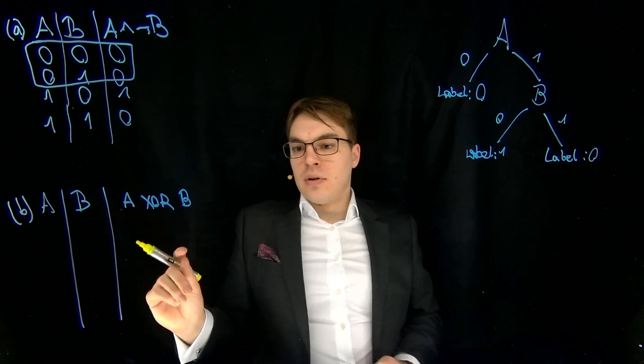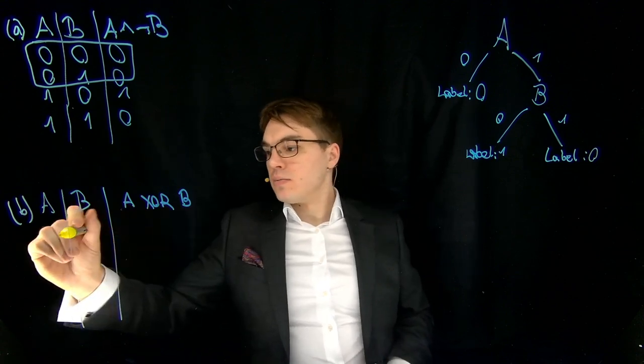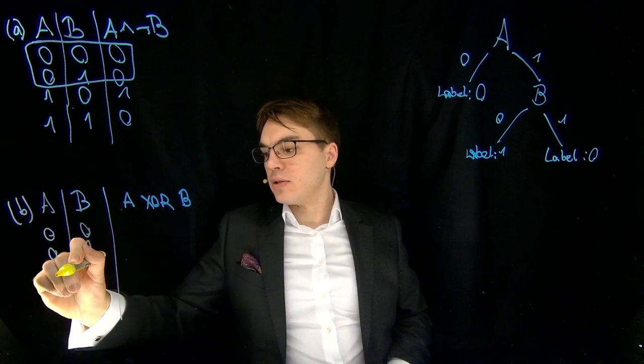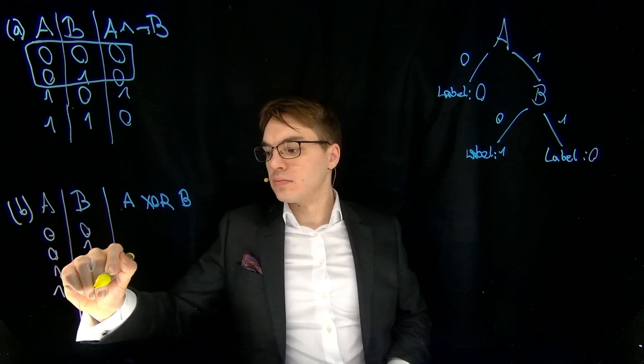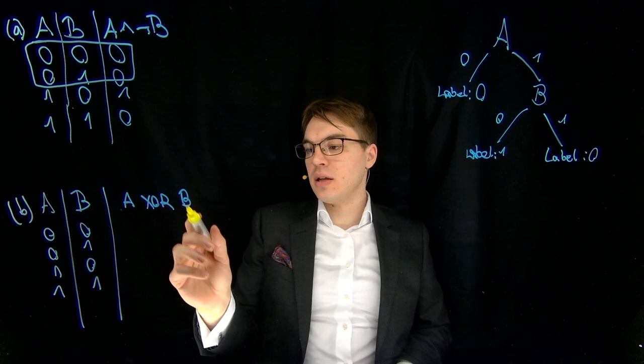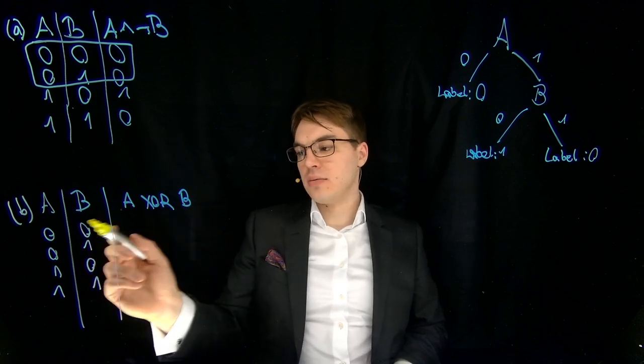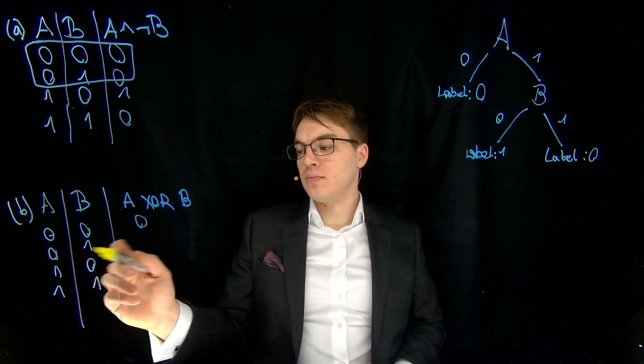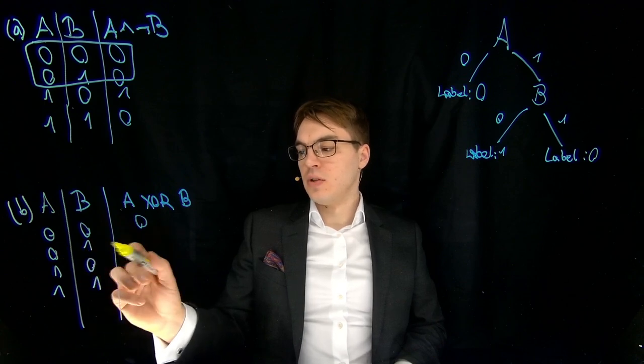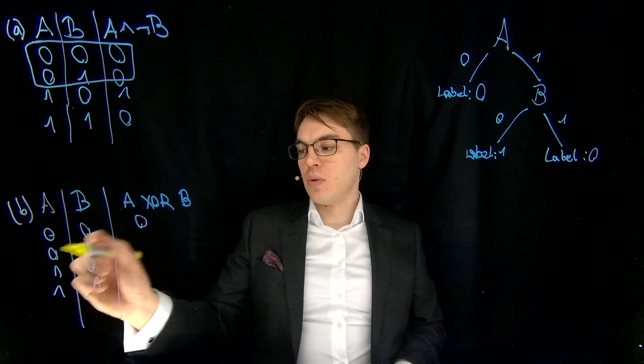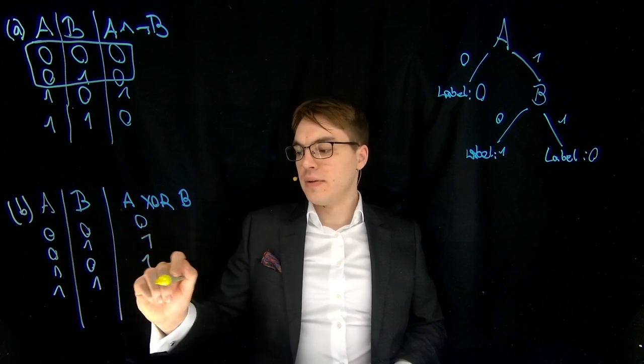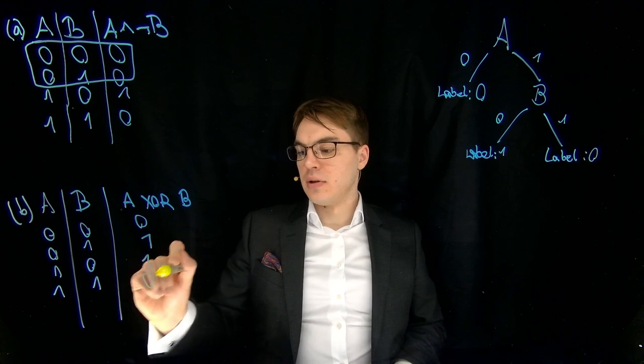So let's do that for the second task also. So I quickly fill in the values for the truth table. Here again XOR is defined the following way. It is only true if and only if one value is 0 and the other is 1. So here we have true values and here we have false again.